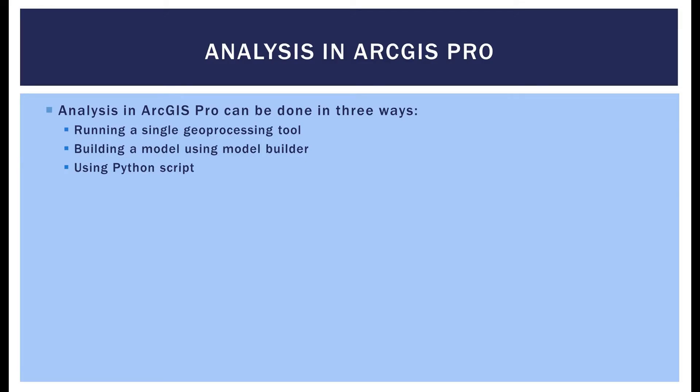You can run a single geoprocessing tool at a time, or by creating a model in Model Builder — let me know in the comments below if you want a tutorial on creating a model in Model Builder using ArcGIS Pro or ArcMap. You can also use Python script. These methods also apply to raster analysis, however we won't cover that in this tutorial.